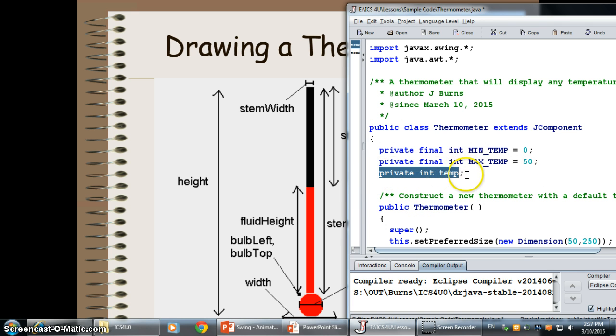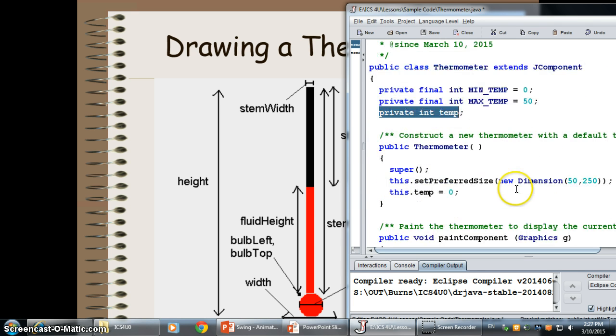And then I have the temp, which is the current temperature of the thermometer. My constructor is a basic constructor. It makes the class. It calls the super constructor of J component. It sets my size to 50 by 250, so the thermometer is 50 wide and 250 tall. And then we initialize our value to zero degrees.